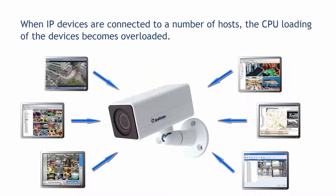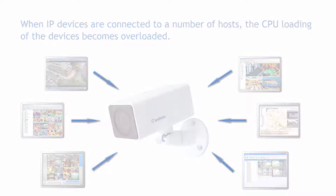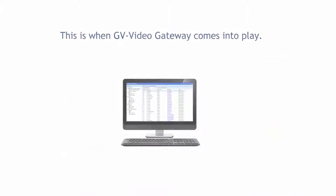When IP devices are connected to a number of hosts, it is possible for the CPU loading of the devices to become overloaded. This is when GV Video Gateway comes into play.